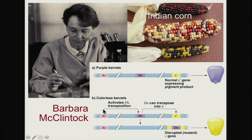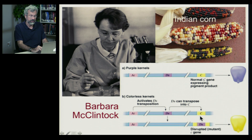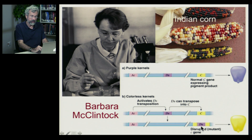Under certain circumstances, the transposon is activated by yet another gene, so that now this DS locus will actually move from its current location on the chromosome and jump to a different spot. If this transposon jumps and happens to land in the middle of gene C, then that gene no longer functions and can no longer produce the purple pigment.